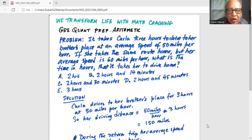If she takes the same route home but her average speed is 60 miles per hour, what is the time in hours that it takes for her to drive home?